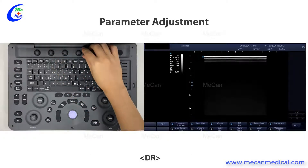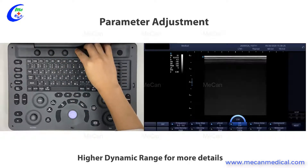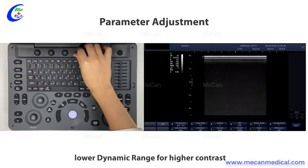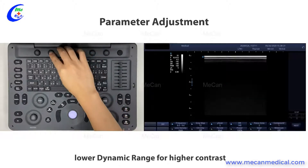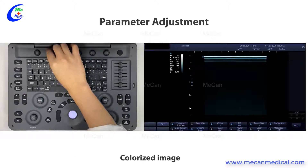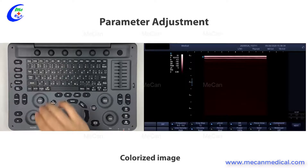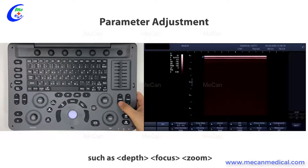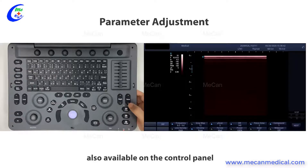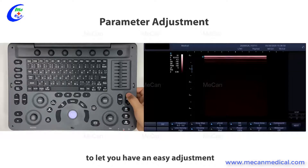Dynamic range: higher dynamic range for more details, lower dynamic range for higher contrast. Chroma: colorizes the image. Other frequently used parameter buttons such as depth, focus, and zoom are also available on the control panel to let you make easy adjustments.